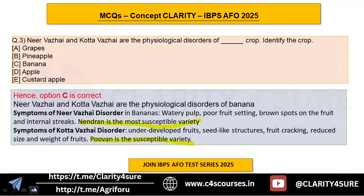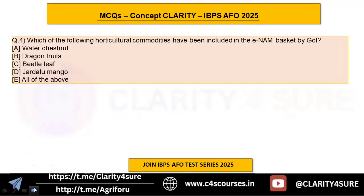Question number four: which of the following horticultural commodities have been included in the eNAM basket by the Government of India? Such questions may be correlated to current affairs — not directly from current affairs, but correlating from current happenings. Recently, the Government of India included some new commodities into the eNAM basket.